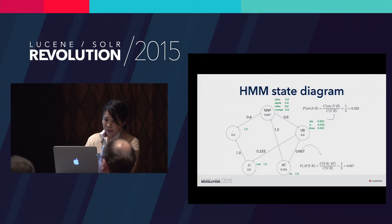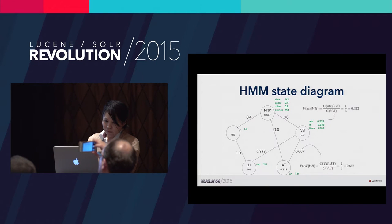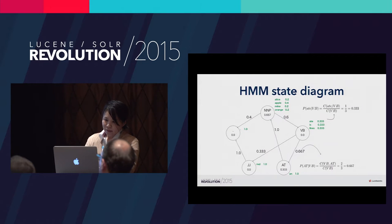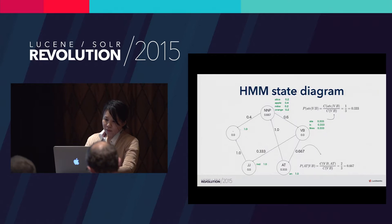If we use our corpus for HMM training, we get this diagram. The key point is that we get this diagram from the Lucene index using the Shingling filter. Numbers in this slide are probabilities, and these probabilities can be calculated by applying the same method.